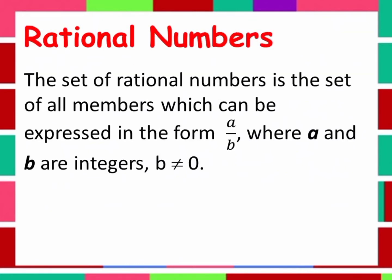The set of rational numbers is the set of all numbers which can be expressed in the form of A over B, where A and B are integers and B is not equal to 0.